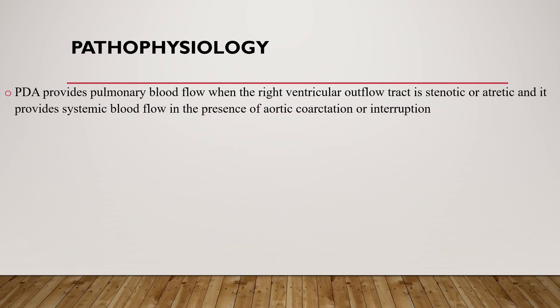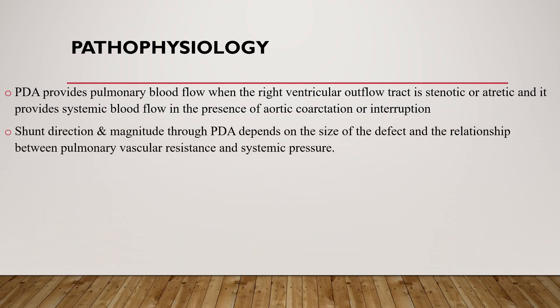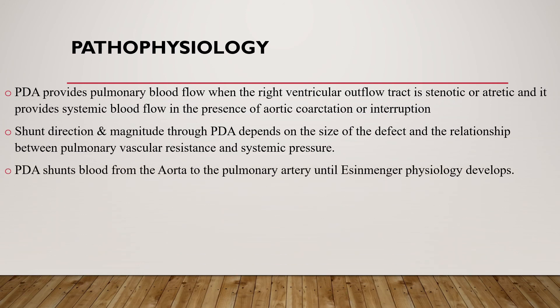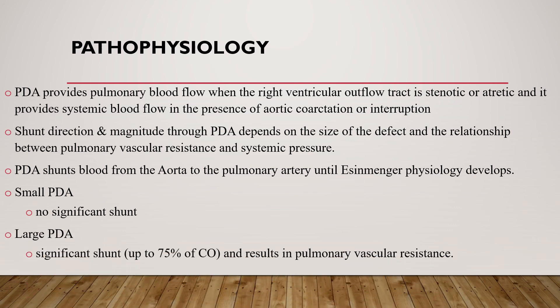PDA provides pulmonary blood flow when the right ventricular outflow tract is stenotic or atretic, and it provides systemic blood flow in the presence of aortic coarctation or interruption. Shunt direction and magnitude through PDA depend on the size of the defect and the relationship between pulmonary vascular resistance and systemic pressure. PDA shunts blood from the aorta to the pulmonary artery until Eisenmenger physiology develops. Small PDAs have no significant shunt, whereas large PDAs can shunt up to 75% of cardiac output and can cause pulmonary vascular disease early.